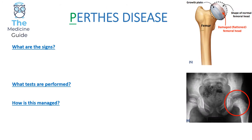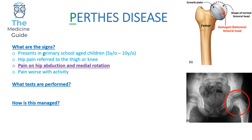Now we're going to focus on Perthes disease. Perthes disease is essentially avascular necrosis of the femoral head, meaning the femoral head has become flattened and fragmented, so it's unable to smoothly rotate in the acetabulum. This restricts the child's movement and mobility. One key feature to remember is that Perthes disease begins with a P, so you should think automatically that it affects children of a primary school age — between the ages of five to ten.